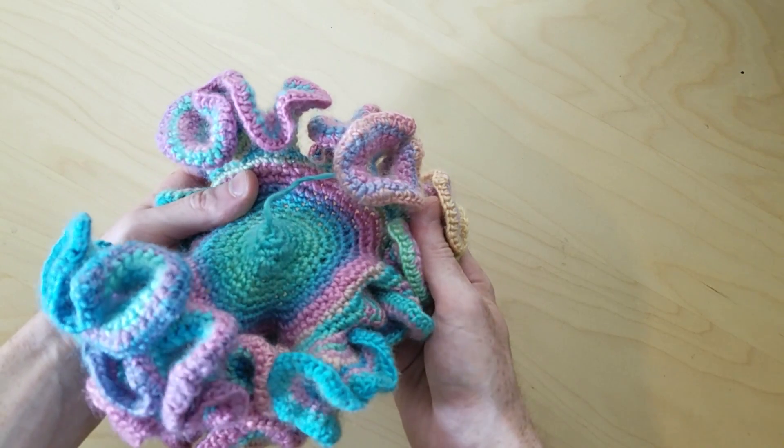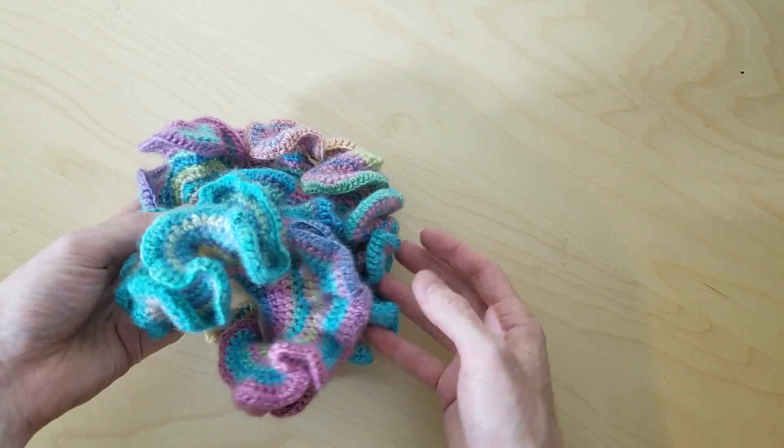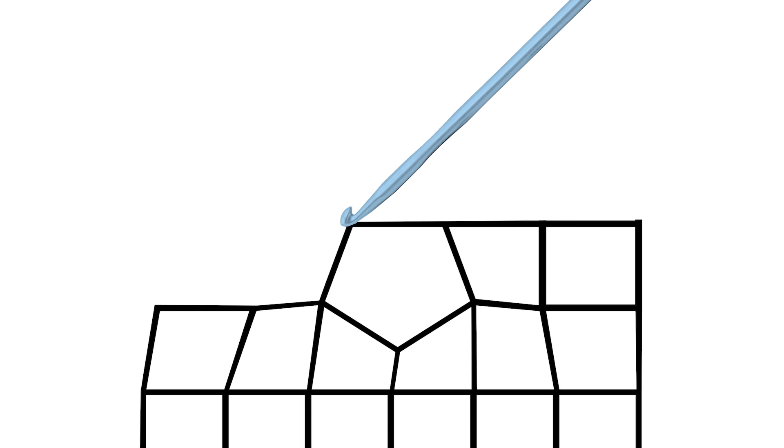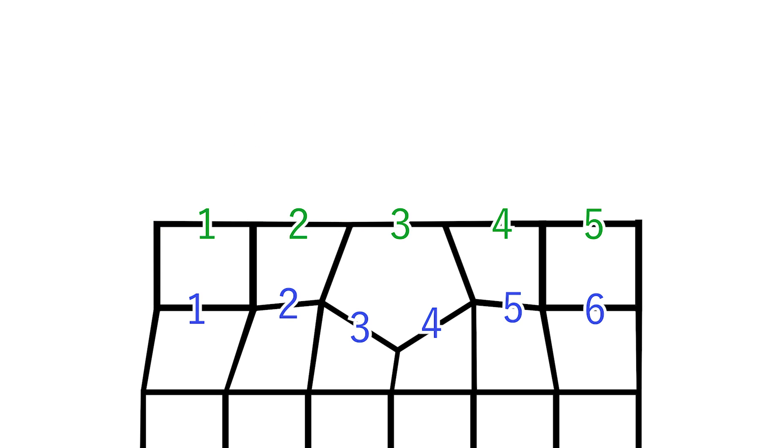But before we get to the tutorial, there's still one more stitch to talk about. As you may have guessed, it's called a decrease. That's when you hook through the next two stitches, connecting them together and losing a stitch in the process. So the next row here would only have five stitches.